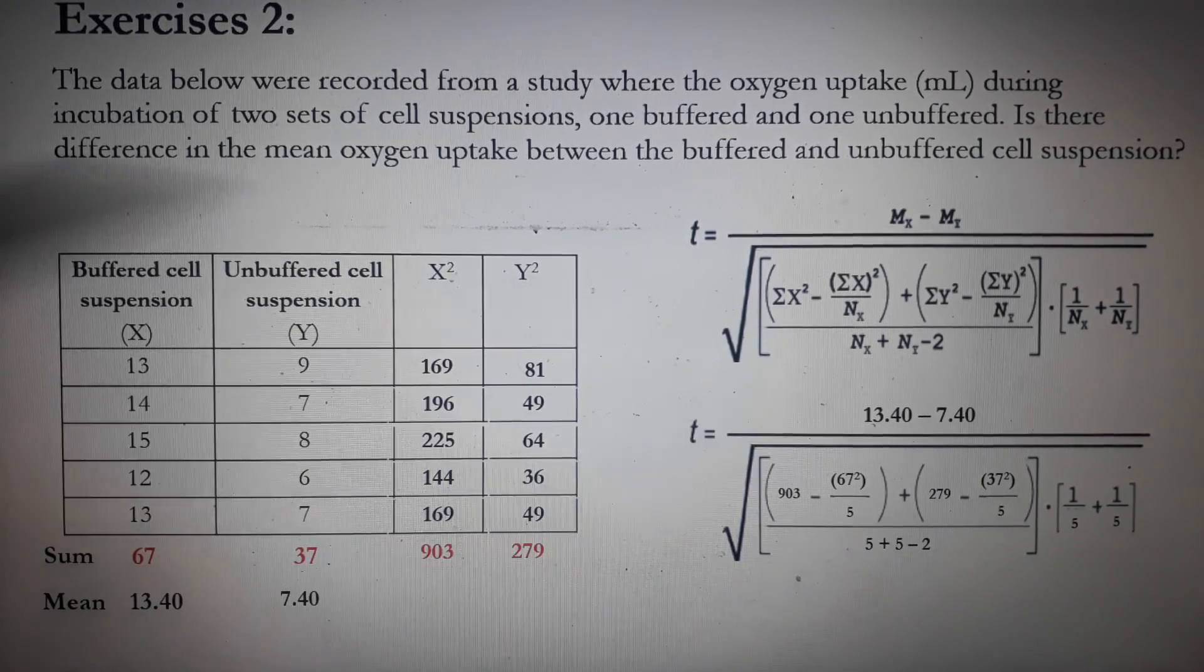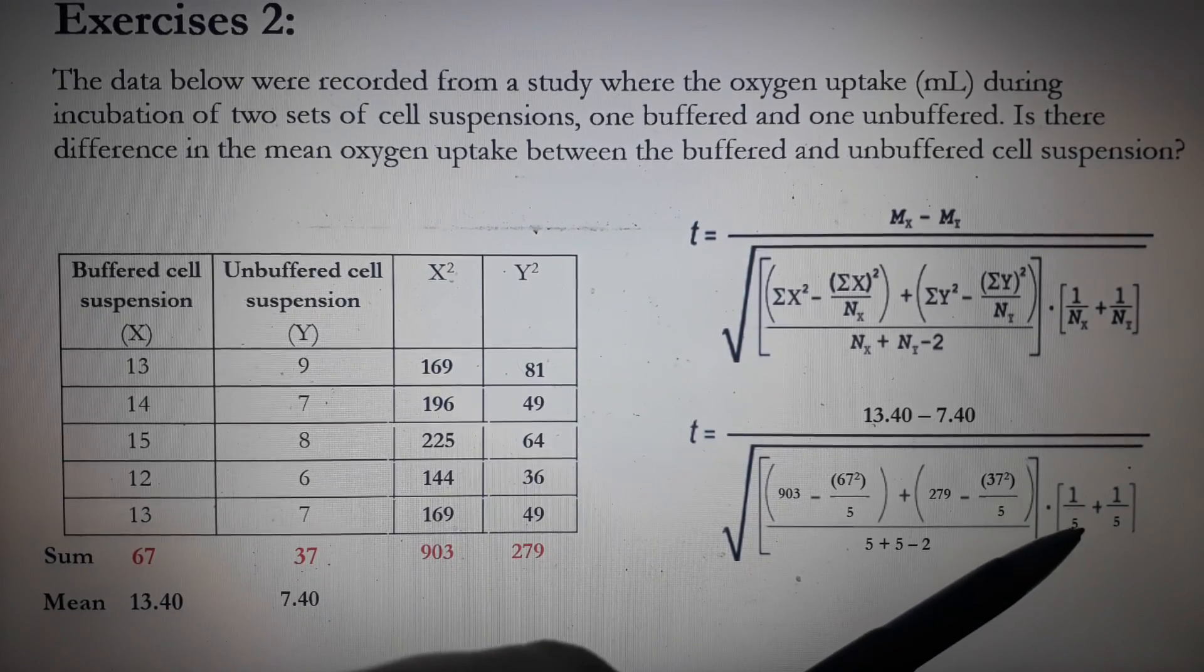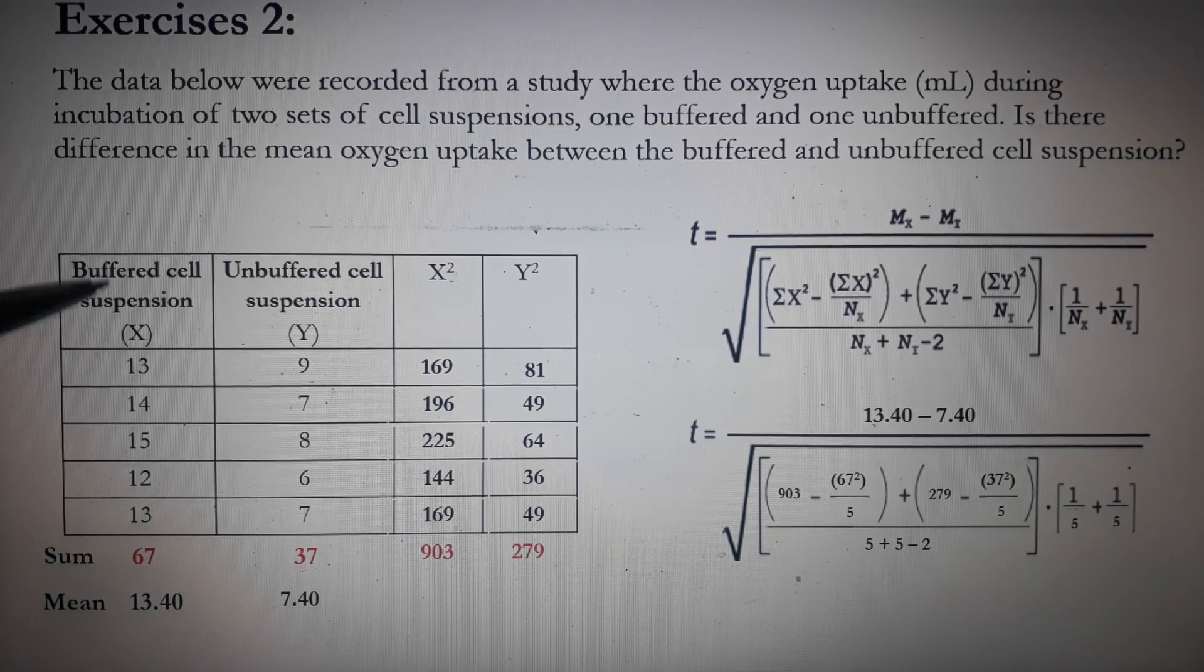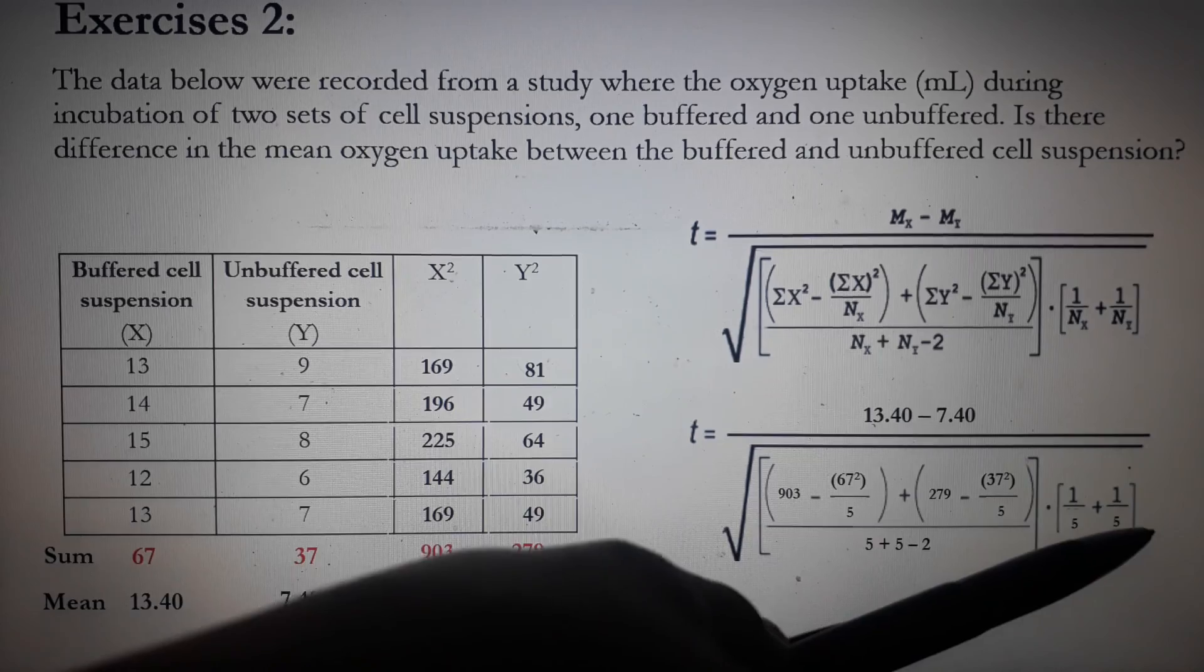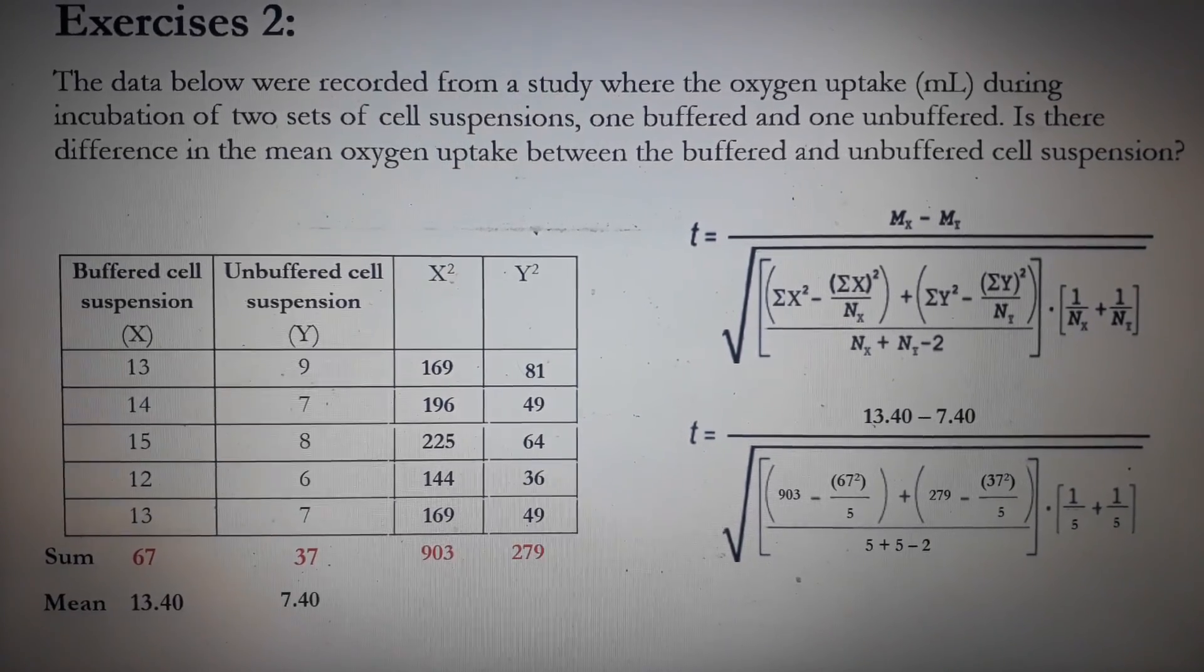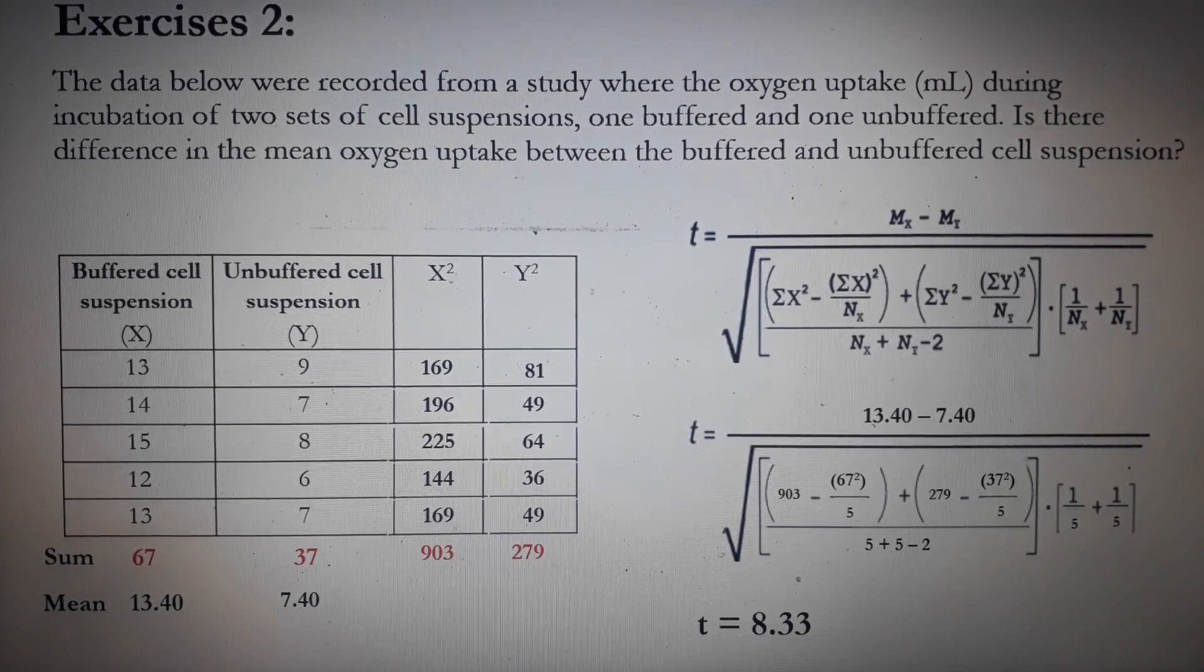All over 5 plus 5 minus 2 times the quantity 1 over the n of x or the number of cases in x column. So that's 5 plus 1 over the number of cases on the y column. That's also 5. So by calculation, the value of t is 8.33.